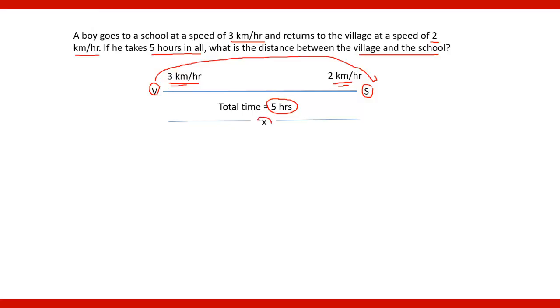First we will assume that the total distance between village and school be x km. Now, since the distance is x and in the first case the speed is 3 km per hour, then the time taken by that boy to travel from village to school will be x by 3 hours. And in the return case it will be x by 2 hours.